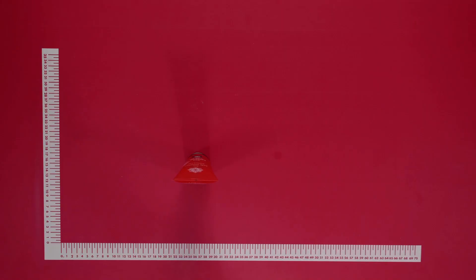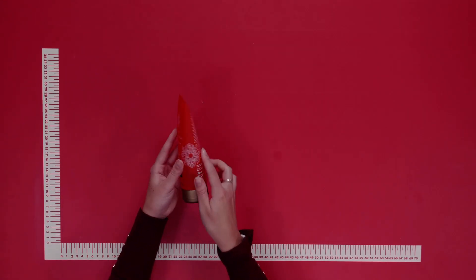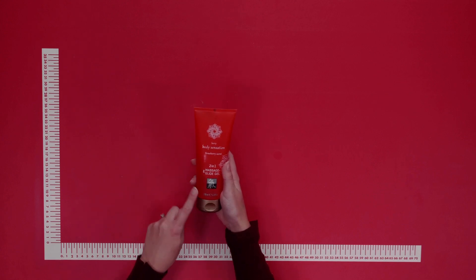Hello everyone and welcome to this video. Today we're going to be talking about the Shiatsu Massage and Glide Two-in-One Strawberry, so let's get started. This is a multi-functional gel by Shiatsu. It comes in 200 milliliters and the scent is strawberry.